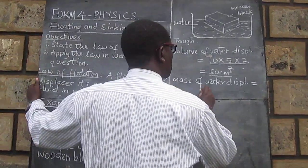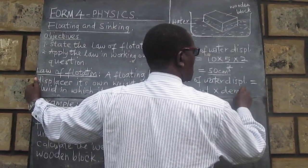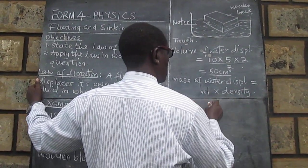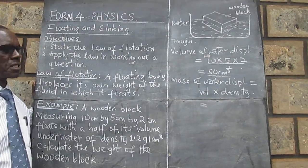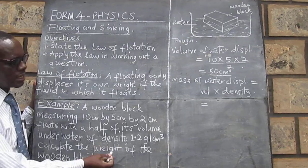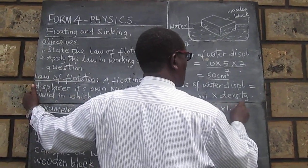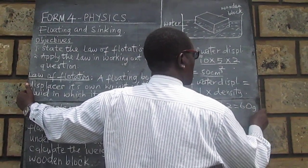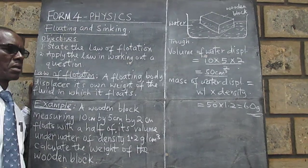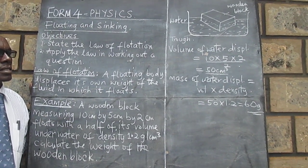And so we get the volume is 50 cubic centimeter. The density is here. So the mass of water displaced is 60 grams.